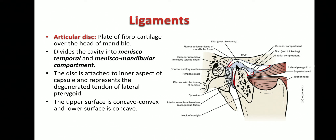Posteriorly the disc splits into two laminae with a venous plexus intervening between them. The articular disc attaches to the margins and interior of the capsule, and shows five regions: anterior extension, anterior thick band, intermediate zone, posterior thick band, and posterior extension. The significance of these five parts will be explained when discussing the movements of the temporomandibular joint.